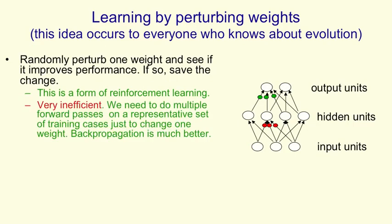The problem is it's very inefficient. Just to decide whether to change one weight, we need to do multiple forward passes on a representative set of training cases. We have to see if changing that weight improves things, and you can't judge that by one training case alone. Relative to this method of randomly changing a weight and seeing if it helps, backpropagation is much more efficient — actually more efficient by a factor of the number of weights in the network, which could be millions.